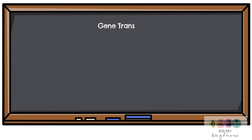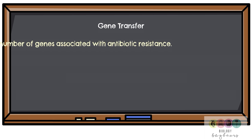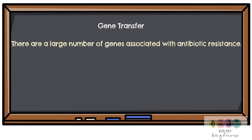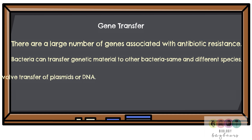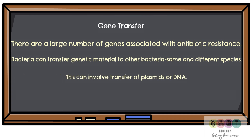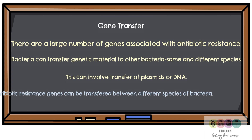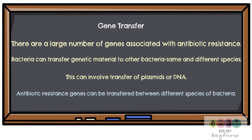The second process is gene transfer. There are lots of different genes associated with antibiotic resistance, and bacteria can transfer genetic material to other bacteria — either of the same species or to completely different species — transferring whole plasmids or individual sections of DNA. In this way, the gene for antibiotic resistance can be transferred from one bacterium into another, and often into different species of bacteria.